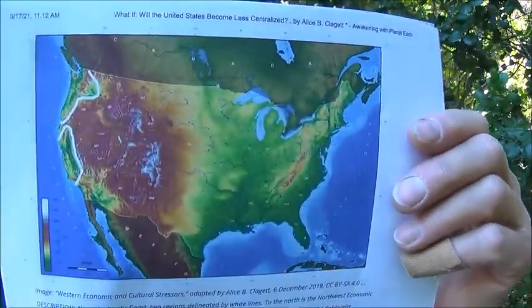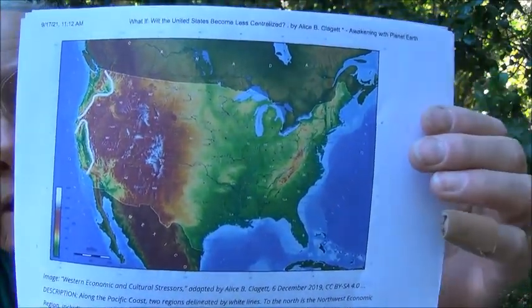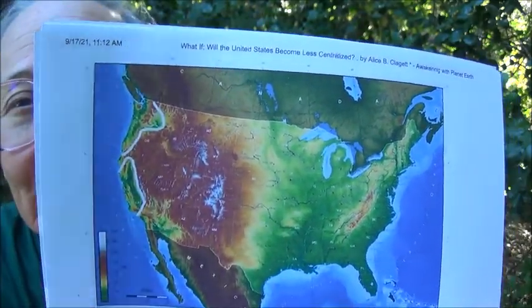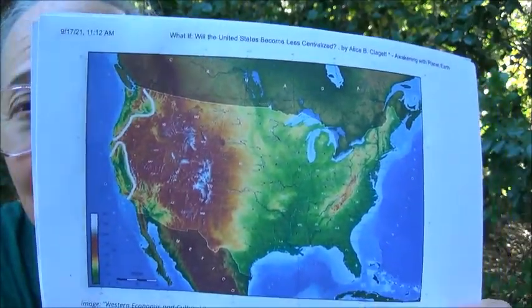The third map is entitled Western Economic and Cultural Stressors: Northwest Economic Region and California Central Valley Economic Region. This map deals with the west coast. On the other side of the United States we have a northwest region and a California central valley region, delineated by white lines — two separate economic regions. Along the Pacific coast, to the north is the northwest economic region including the parts of Washington state and Oregon with good rainfall. To the south is the California central valley economic region, also with good rainfall.